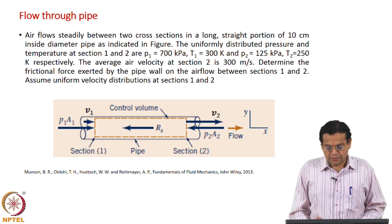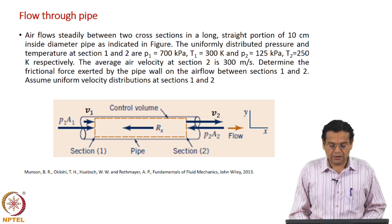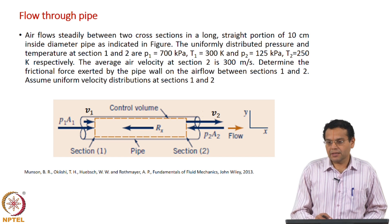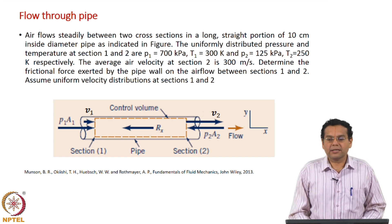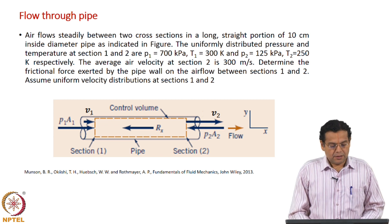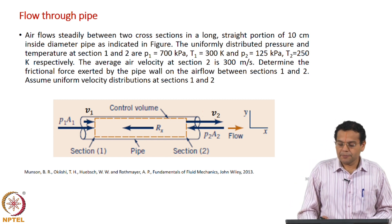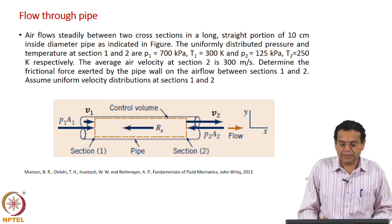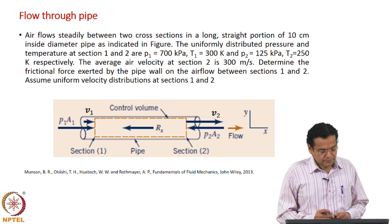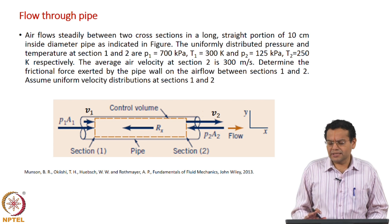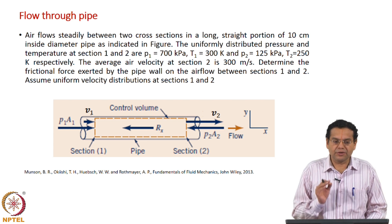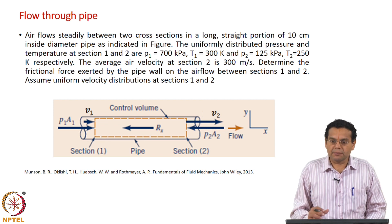In this example, we are going to look at another form of surface force, namely frictional force — that is the main objective of this example. In addition to that, we are going to consider the example where we have compressible flow. Air flows steadily between two cross sections in a long straight portion of 10 centimeter inside diameter pipe — a simple pipe with uniform cross section, no change in direction. We want to focus here only on the frictional force; geometry has been kept very simple.